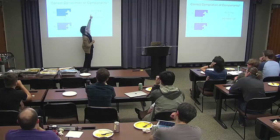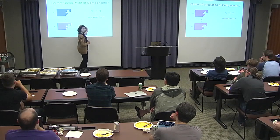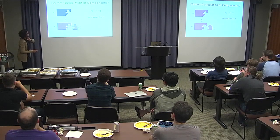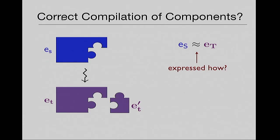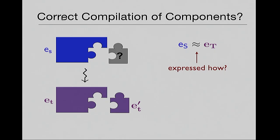So this idea of running components and seeing if they have the same observable behavior doesn't even hold. The question is: how are we going to express that a source component ES that compiles to a target component ET are equivalent? What we want out of these theorems is something about what happens when we link our compiled code with some other code. ET is our compiled code, and some other target code ET prime. I want to be able to say that when I link together ET with some other ET prime and run that, I should get some corresponding behavior at the source.